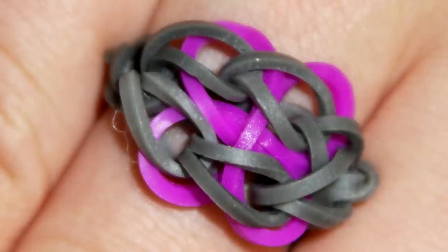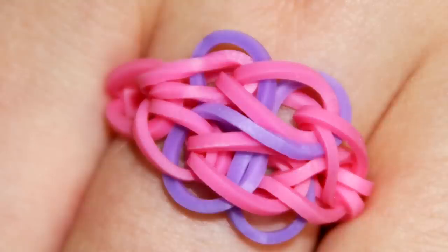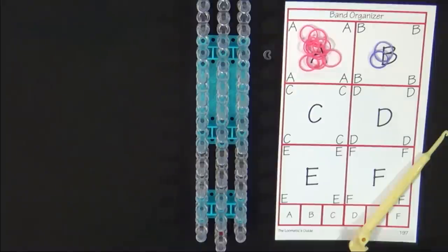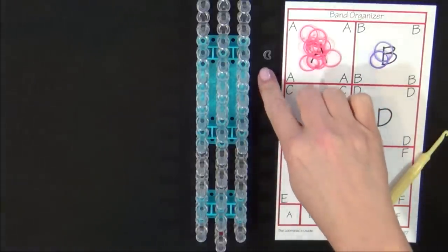Hi, this is Suzanne from Rainbow Loom. Today I'll be showing you how to make the Butterfly Blossom Ring. This is an intermediate level design. To make this ring you will need 10 A colored bands and 2 B colored bands and your C clip.